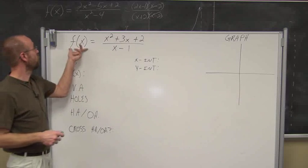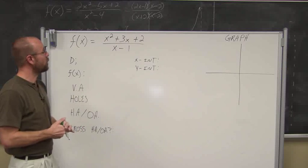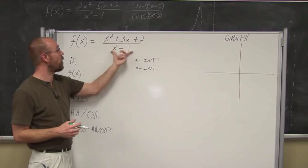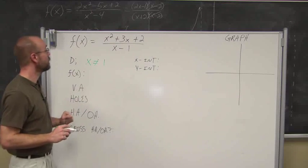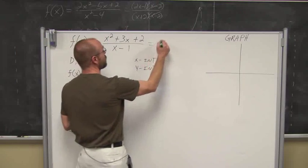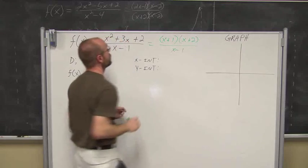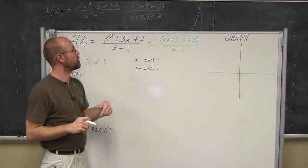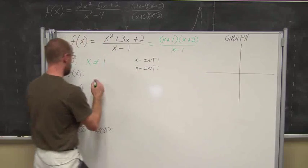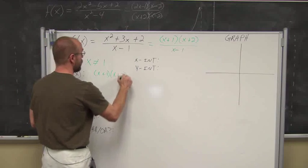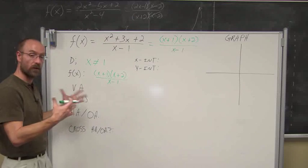For this example, we have f(x) equals (x² + 3x + 2) over (x - 1). To find the domain, the denominator is already a linear factor, so x cannot equal positive 1 — that would make it 0 and undefined. Let's see if it reduces: the numerator factors to (x + 1)(x + 2), since the factors of positive 2 that sum to positive 3 are 1 and 2. Nothing cancels — x + 1 is not the same as x - 1 — so it's already in reduced form. You can leave it in factored form, which makes it easier to find values later.